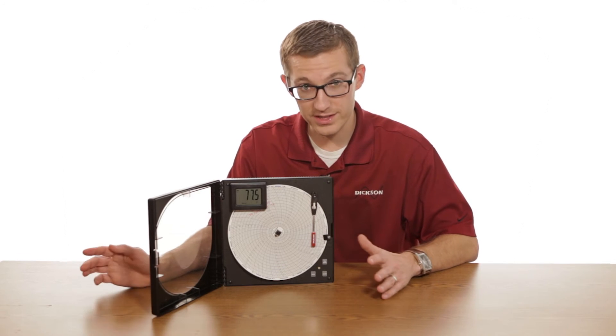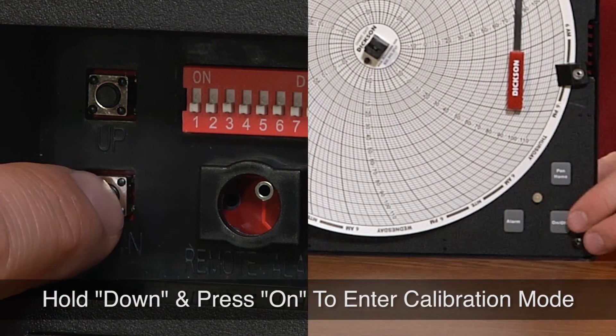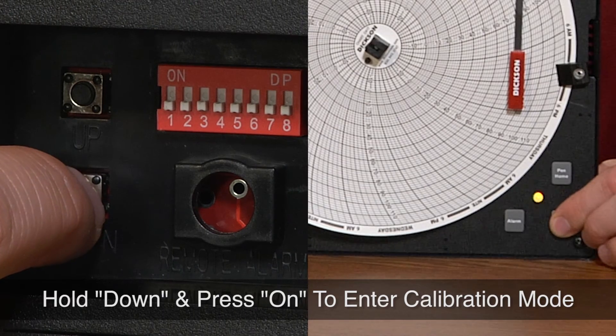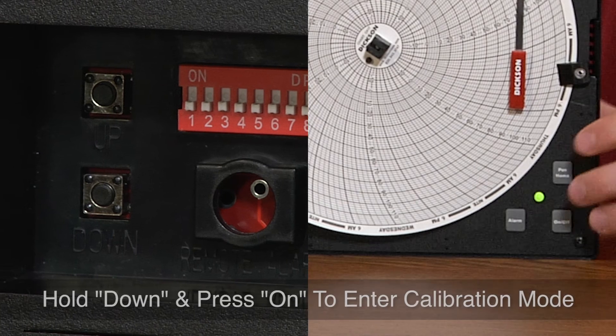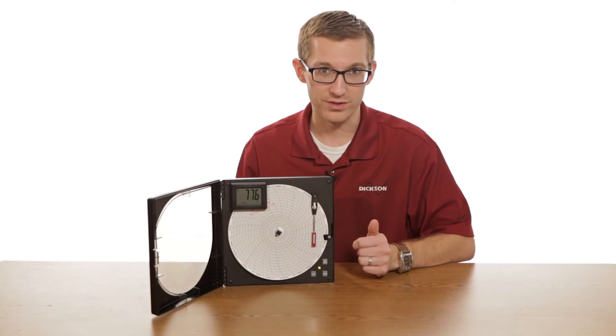So to start this process, you want to hold down the down button on the back of the unit and then the on off button. You're going to get a blinking light down there in the bottom left and that blinking light turns green, you're good and you're into the calibration mode. It's important to note that you always want to hit the down button first or you'll turn off the unit.